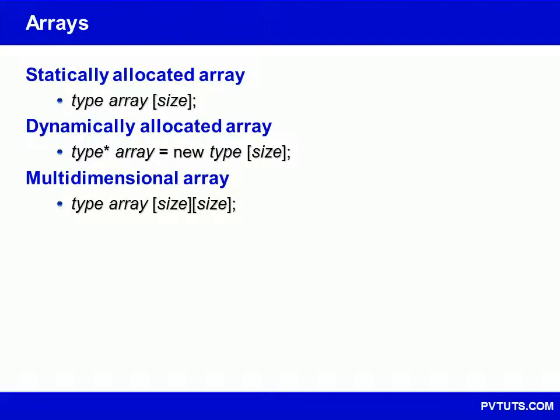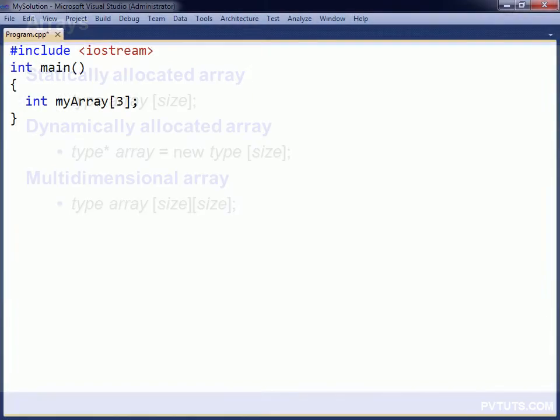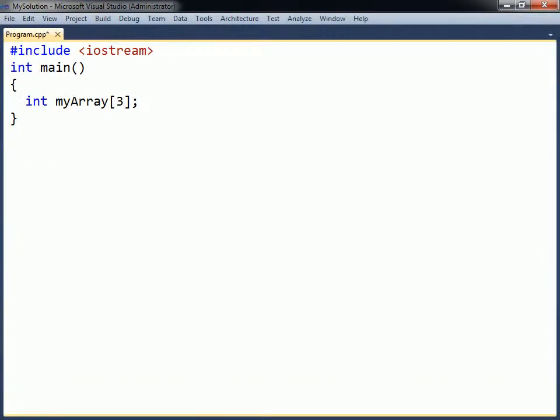An array is a data structure used for storing a collection of values that all have the same data type. To declare an array, you start as you would a normal variable declaration, but in addition append a set of square brackets following the array's name.